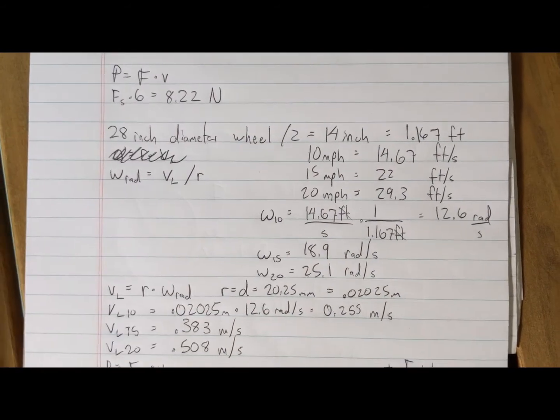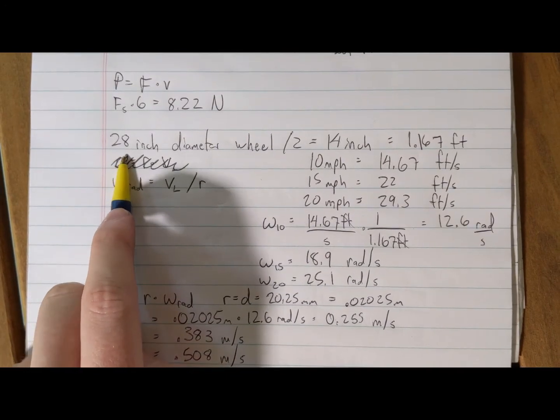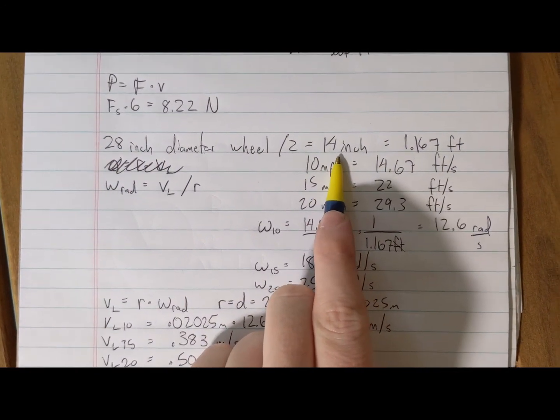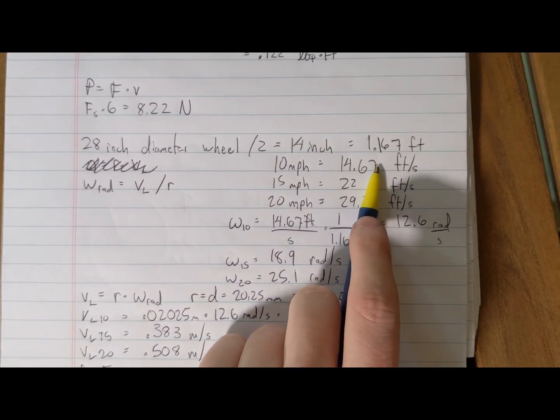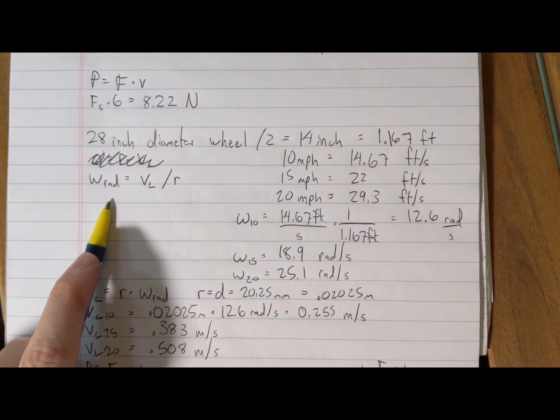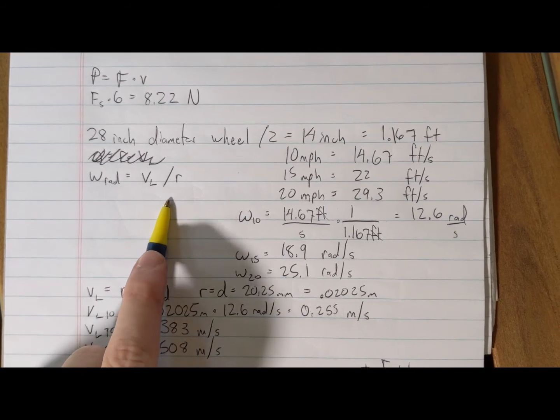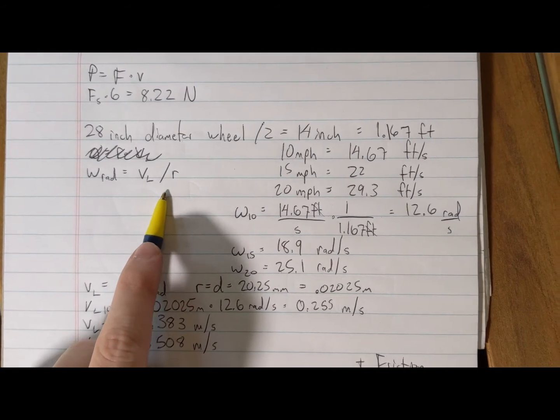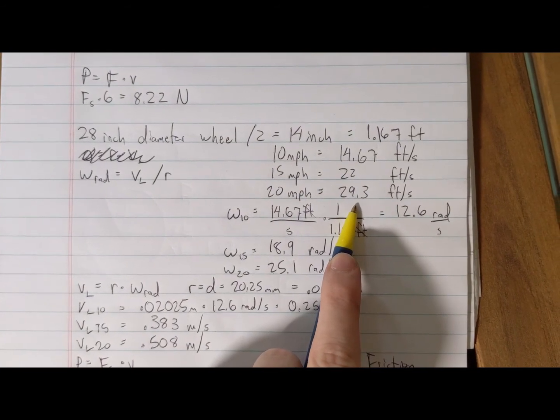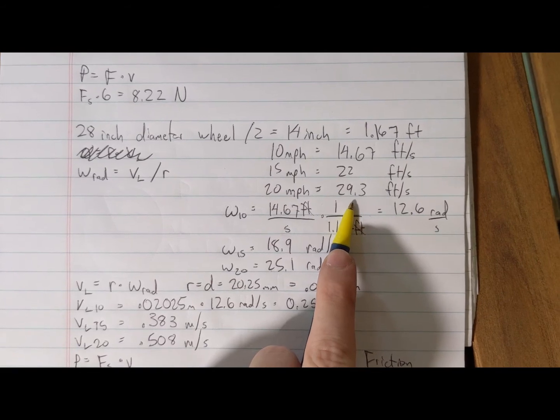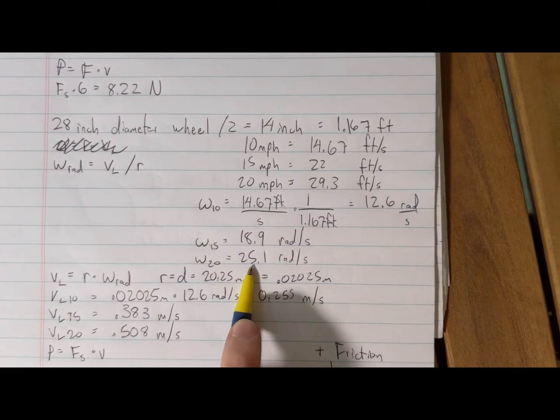What I've done is converted the 28 inch diameter wheel divided by 2 to get a 14 inch radius and changed that to feet. The formula we're using is the rotational speed in radians per second equals the linear velocity divided by the radius. At these different speeds, we have a different linear feet per second at the wheel. That's what speed the very edge of your wheel is rotating at. I've converted those to radians per second. You can see the math right there.